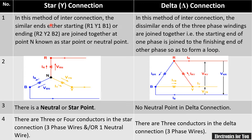A star connection is one in which similar ends are joined together. Either the starting ends or the ending ends are joined together so that they form a point known as star point or neutral point.